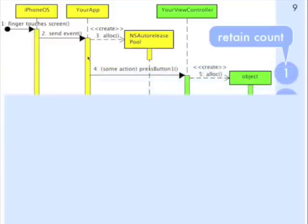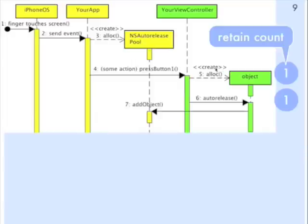Then that event gets passed into your code so that you can handle the event — typically through your view controller. Your view controller then gets to do whatever it wants. Let's say you create a new object with an alloc; when you create a new object with alloc, it has a retain count of one. Then the code in your view controller passes auto-release to that object. When you pass the object the auto-release message, it causes the object to add itself to the auto-release pool. That doesn't affect its retain count — it stays at one.